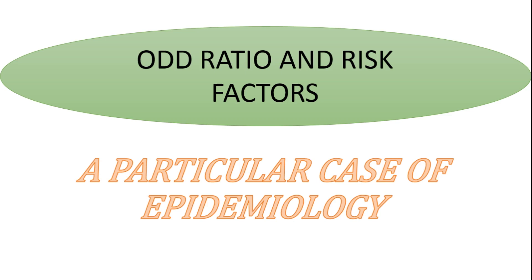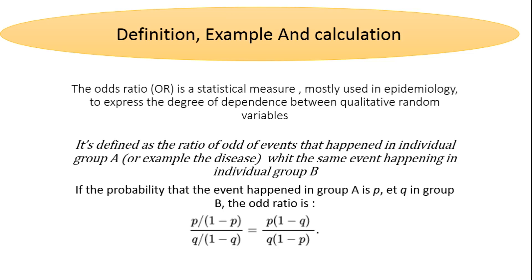Today we're going to deal with odds ratio in risk factor analysis. We'll take a particular case in epidemiology to show how odds ratio can be used to analyze the degree of dependence between a disease and a factor that may be related to it. By definition, odds ratio is a statistical measure mostly used in epidemiology to express the degree of dependence between two qualitative variables.